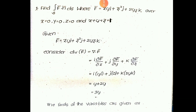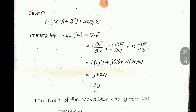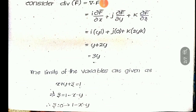To use Gauss divergence theorem, convert the surface integral into a volume integral. For the right-side integral, F̄ is given, so find the divergence of F̄. Calculating the divergence for the vector function, you get the answer 3Y.